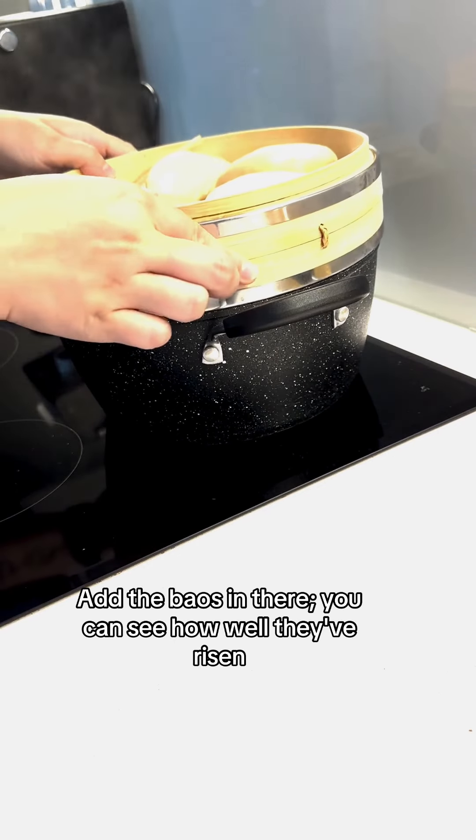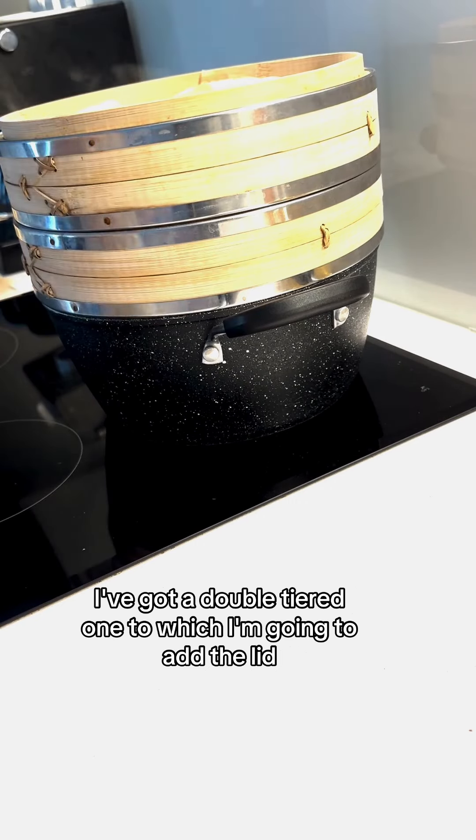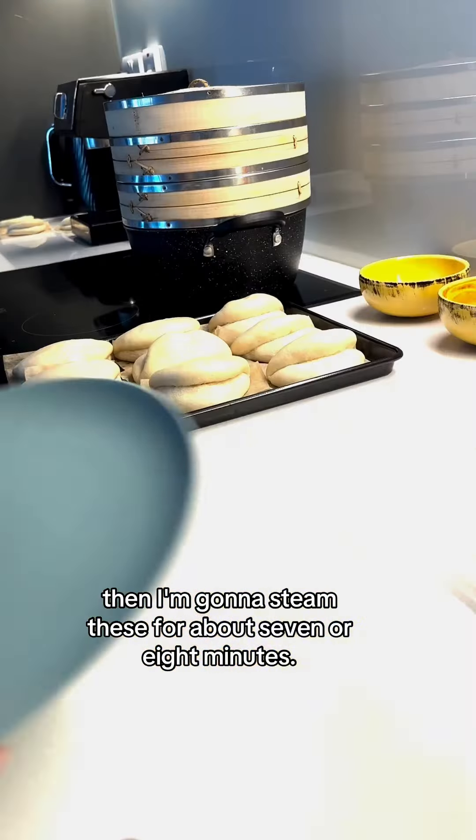Add the buns in there, you can see how well they've risen. I've got a double-tiered one to which I'm going to add the lid. Then I'm gonna steam these for about seven or eight minutes.